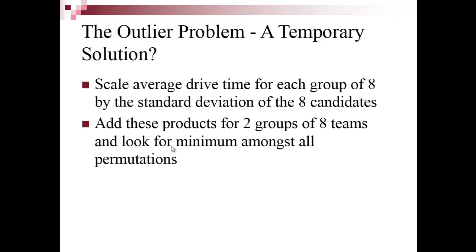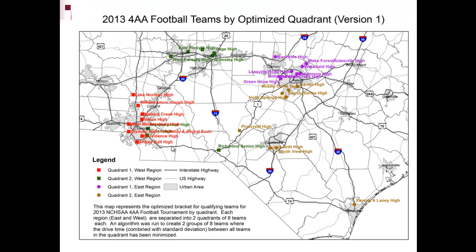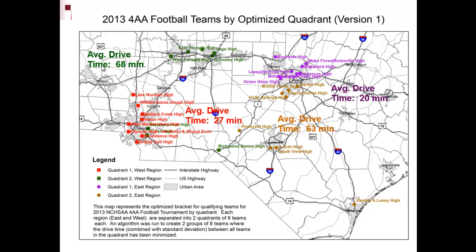Since standard deviation is unitless and we're working with averages, there shouldn't be a unit disagreement, though there may be better approaches. I then looked for a minimum among permutations of the product of drive time times standard deviation, running all 6,435 combinations again. In the new results, Richmond Senior is now grouped with the two schools on the eastern side of Charlotte, plus the five schools from the Greensboro-Winston-Salem area. The average drive time increases slightly to 68 minutes for green and 27 for red, but the outlier is eliminated.